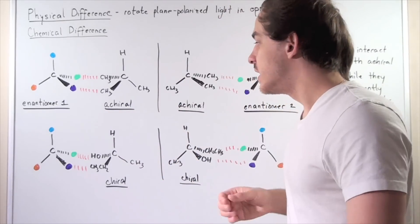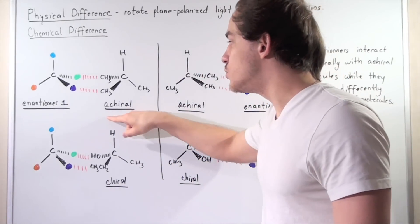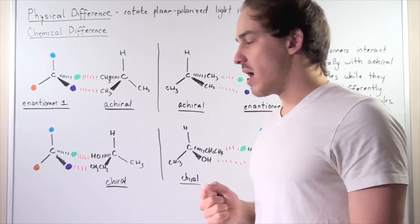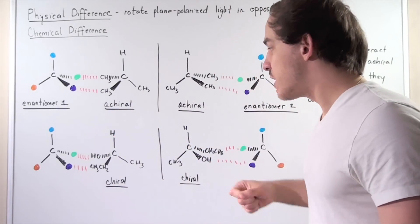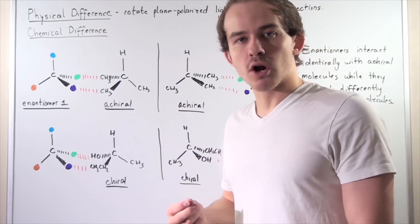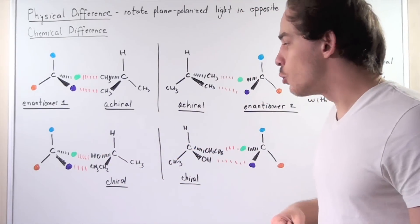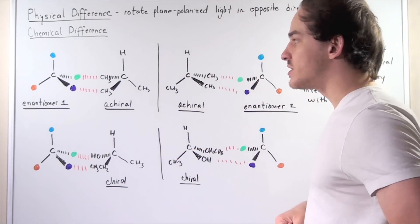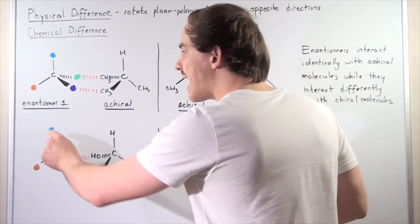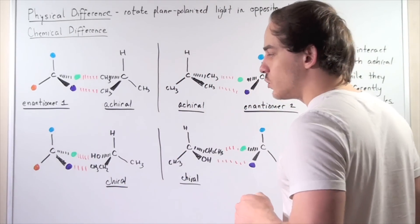Now let's look at a different story. Instead of using an achiral molecule, we're going to use a chiral molecule — meaning this carbon is a stereogenic carbon attached to four different non-identical groups. Let's take the same exact enantiomer and see how it interacts with our chiral molecule.